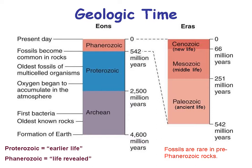Geologic time is divided into eons. We live in the present day as part of the Phanerozoic eon, which goes back 542 million years. The Phanerozoic is then split into three eras: the Paleozoic era from 542 to 251 million years ago, the Mesozoic era from 251 to 66 million years ago, and then the Cenozoic era up until the present.